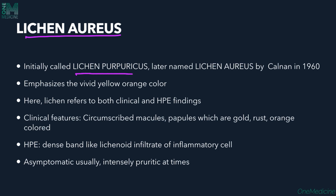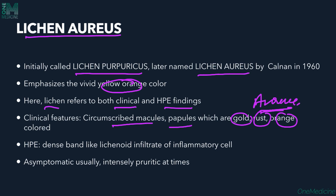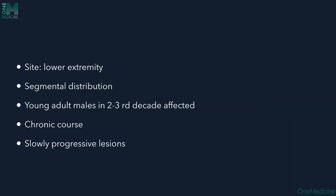Lichen aureus was earlier called lichen purpuricus. The name 'aureus' emphasizes the vivid yellow-orange color of the lesion. Clinically, it presents with circumscribed macules or papules of gold, rust, or orange color on the extremities. Histologically, a dense band-like lichenoid infiltrate of inflammatory cells is seen. It may be asymptomatic or intensely pruritic, predominantly affects the lower extremities, and is seen in young adults in the second or third decade.